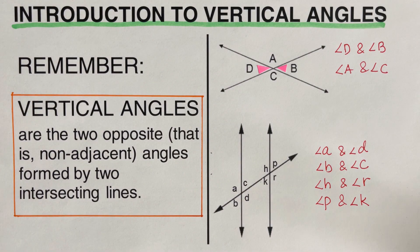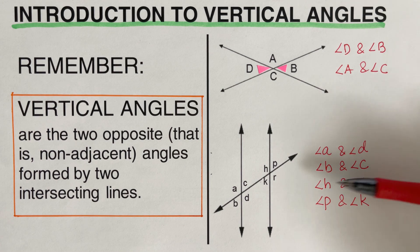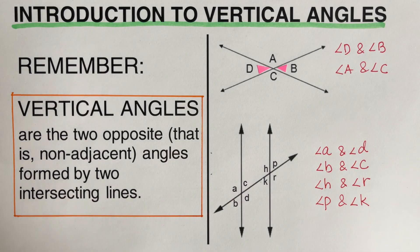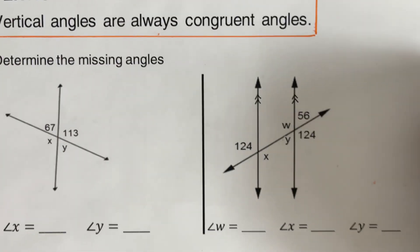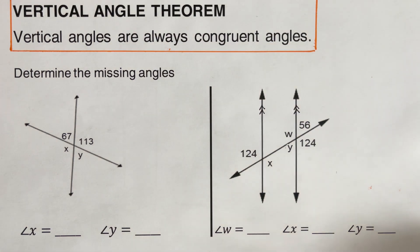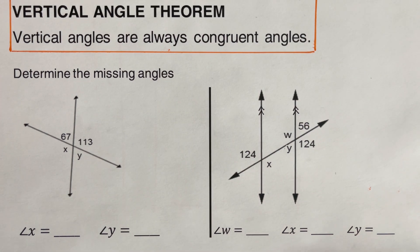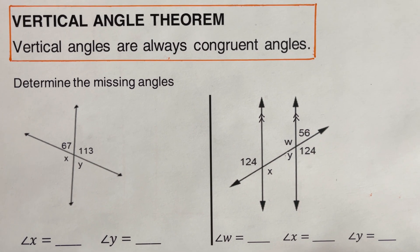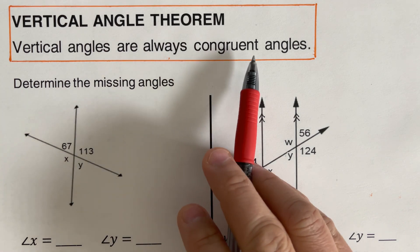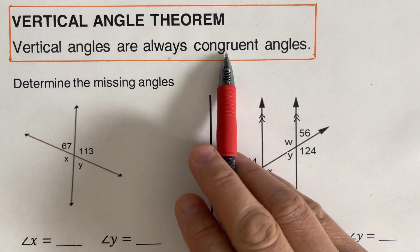These are the pairs we consider as vertical angles. Now let's move on to the vertical angle theorem. The vertical angle theorem states that vertical angles are always congruent — and the word congruent means they are always equal to each other.